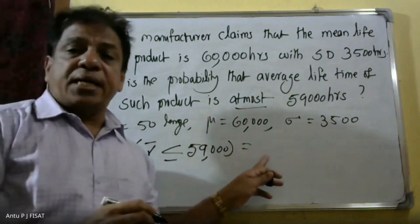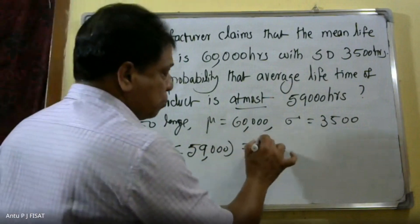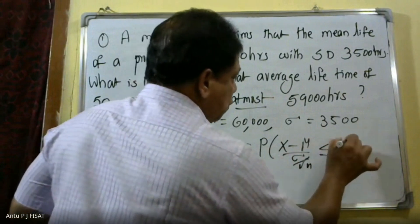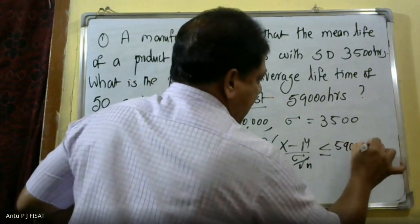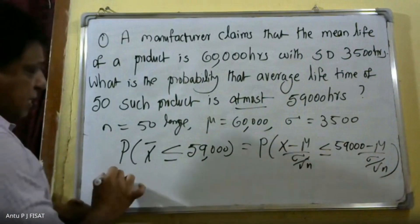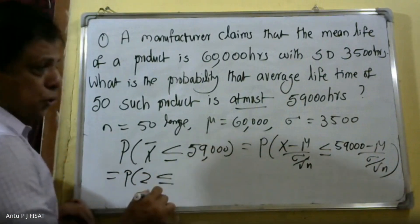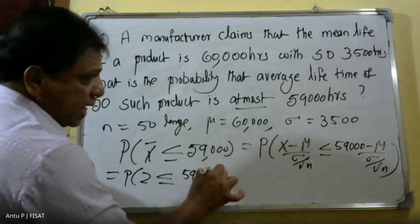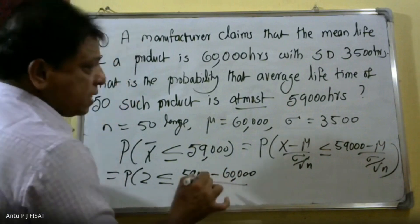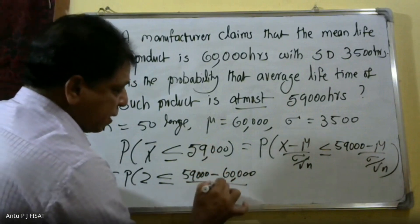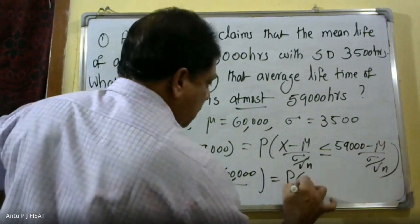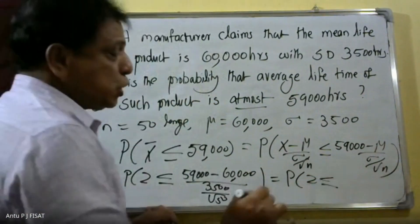We convert this to the standard normal distribution. The formula is: Z equals X-bar minus mu, divided by sigma divided by root n. Substituting: (59,000 minus 60,000) divided by (3,500 divided by root 50), which gives Z equal to minus 2.02.